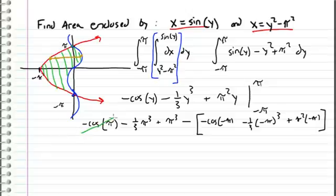This expression right here can simplify to positive one. This expression, cosine of negative pi is negative one and then take negative that which is positive one. Here these guys combine to two thirds pi cubed.